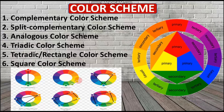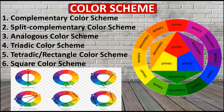Next is the triadic color scheme. In this scheme, you form an equal triangle on the color wheel, leaving equal gaps between the three colors. For example, selecting orange (secondary) gives you purple and green as the other two secondaries. If you select primary red, the combination is yellow and blue. If you select a tertiary color, you leave three colors after each selection to form the triangle. This way you make a triadic color scheme.